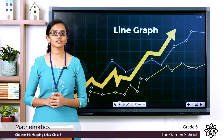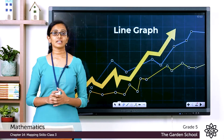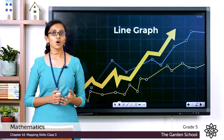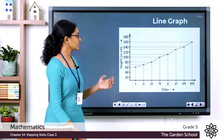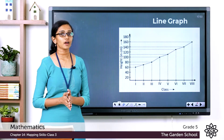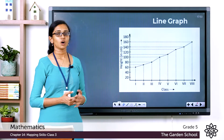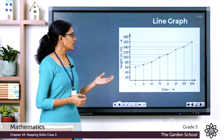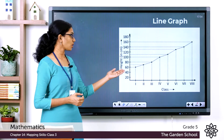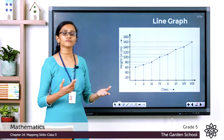Good morning Grade 5, welcome back to Grade 5 Mathematics class. Today let's learn the next method of data representation — it is called a line graph or line chart. A line graph is used to represent data that changes over time, over a period of time. In a line graph we plot data using dots, and these dots are connected with straight lines in a dot-to-dot fashion.